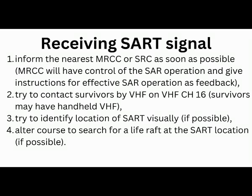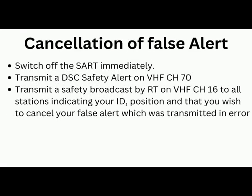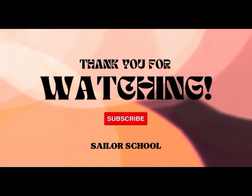If due to a mistake or an internal issue the SART is accidentally activated, you are supposed to switch off the SART immediately and transmit a DSC safety alert on VHF channel 70. Since SART operates within VHF range, you must send a DSC safety alert stating it was a false alert, and transmit a safety broadcast by radio telephone on VHF channel 16 to all stations, indicating your ship's ID, position, and that you wish to cancel the false alert that was transmitted due to an error.